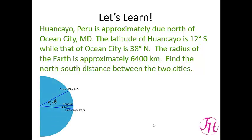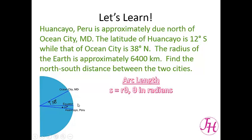It always helps to draw a picture. Here we have our earth and the equator is the line in the center. From the equator, Ocean City is 38 degrees north, and Huancayo is 12 degrees south. So the angle in between from Ocean City to Huancayo is 50 degrees. Remember our arc length is s = rθ where θ is in radians.